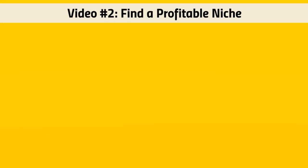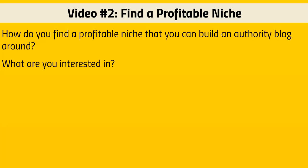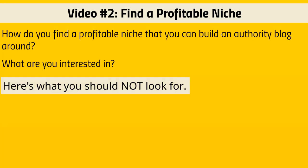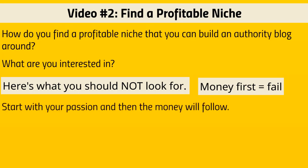Welcome back. This is video number two. We're going to talk about how you can find a profitable niche that you are an authority around. I want to ask you: what are you interested in? What are you passionate in? I want to address an issue — many people tend to choose niches based on profitability, and that's the wrong way. You should look for something you're interested in, because if you look at profitability or the money first, you will eventually fail. You will run into a roadblock, get overwhelmed, it'll be boring, and you'll have no interest to continue. You also won't look like you really know what you're talking about. So start with your passion.